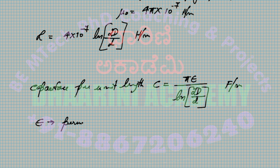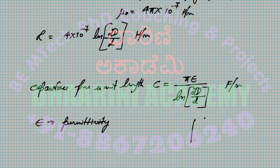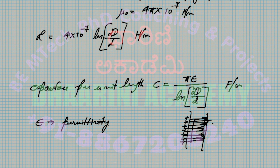Permittivity ε is a property of a dielectric medium — it is a measure of the electric flux that can pass through the material, or equivalently how much charge can be deposited on both sides. For a parallel plate capacitor, it determines how much flux passes through the dielectric.